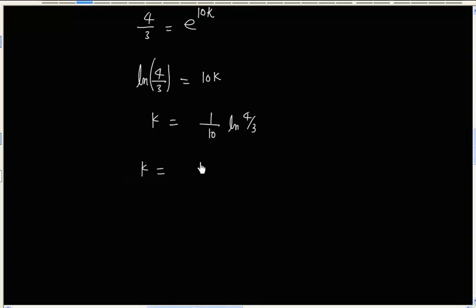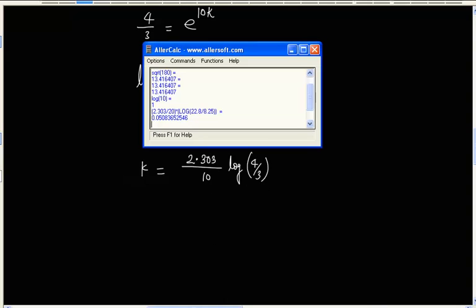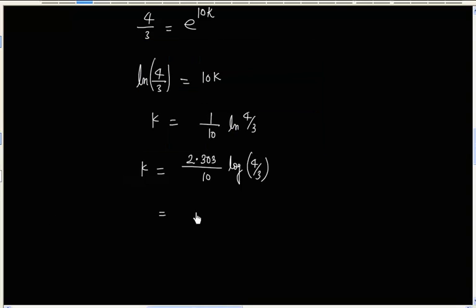And we can express ln into log by multiplying 2.303. So let's find this value. This is 0.2303 multiplied log 4 by 3. So this value is 0.02877. This is k, and unit will be minute minus 1.